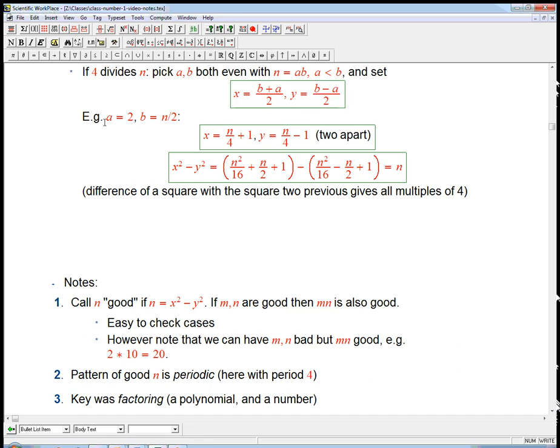For example, if you say A = 2 and B = n/2, that's fine because since n is divisible by 4, B will still be even, which is crucial for all this stuff. If you look at this and you just do a tiny bit of arithmetic, you get x = n/4 + 1 and y = n/4 - 1.